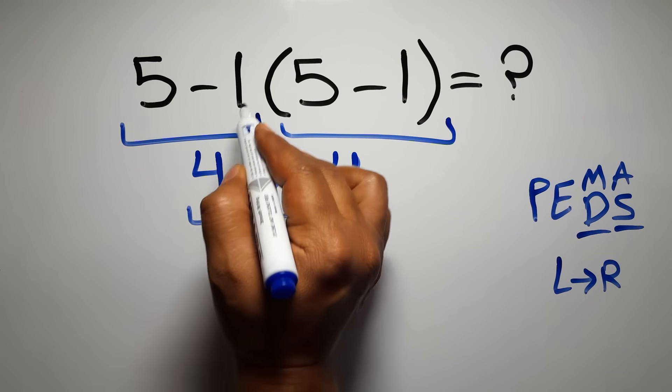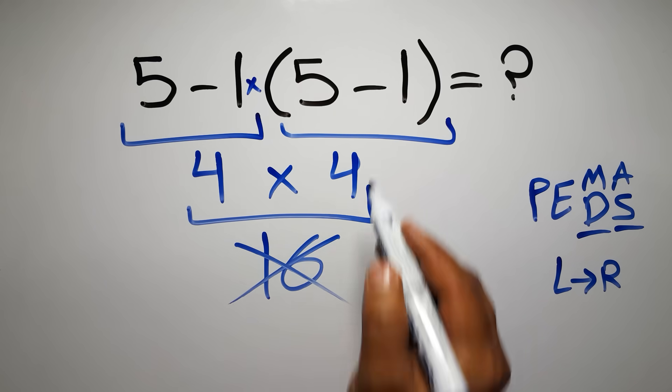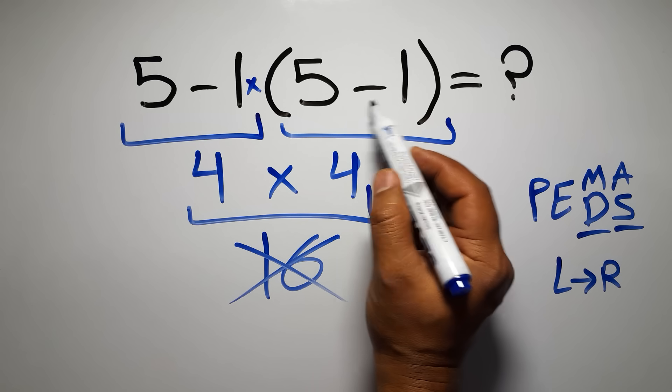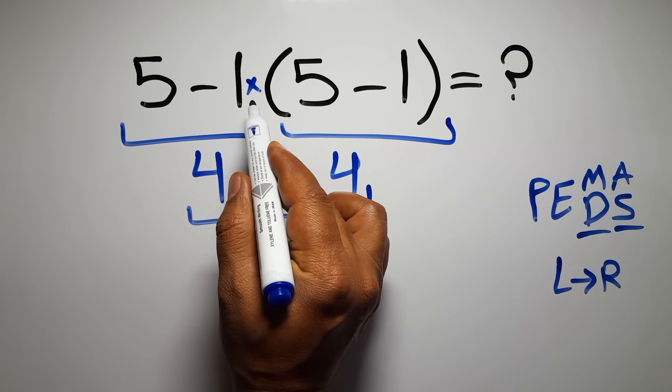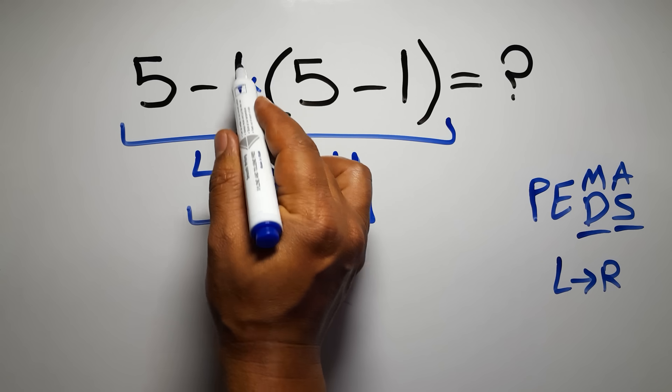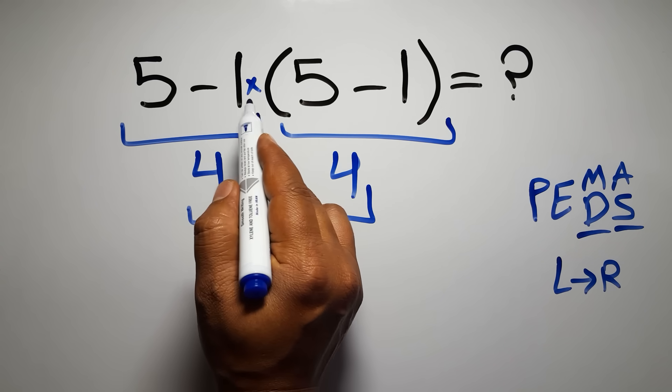Here we have one subtraction, one multiplication, and one parentheses. Inside these parentheses we have one subtraction. Here we have a multiplication, because in mathematics when a number is placed next to parentheses it means multiplication, and we usually don't write the multiplication sign for brevity.